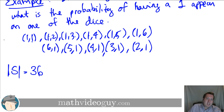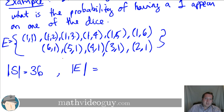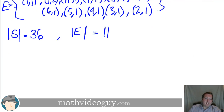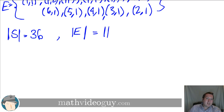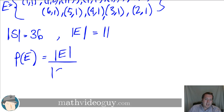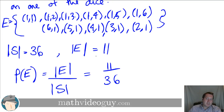We call this event E. The cardinality of E is 11. Since we assume all dice are fair, each outcome is equiprobable, so we simply count the number of outcomes in our event divided by the total outcomes in the sample space. Therefore, P(E) = |E| / |S| = 11/36.